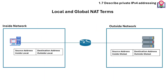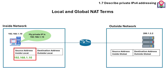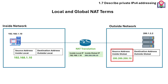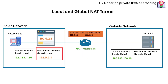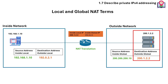It's also important to understand the local and global NAT terms. The inside local address is the private IP address assigned to a device inside the local network, used for identifying a local host before translation. The inside global address is the public IP address that the router uses to represent the internal device to the outside network — the IP address visible on the internet after NAT translates the private IP. The outside local address is the IP address of the external device as seen by the internal network; it could be the same as the outside global or different if NAT is in place for external devices too. The outside global address is the actual IP of the server or host outside the local network.